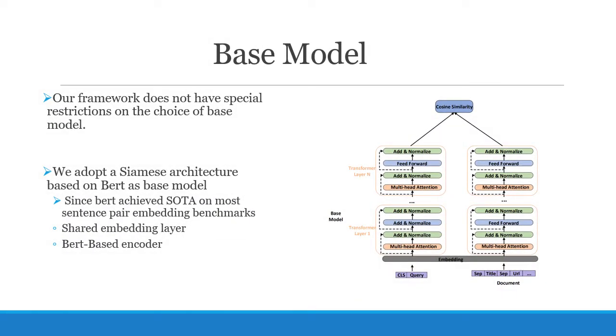It is worth noting that our framework does not have special restrictions on the choice of base model. Any model can meet our needs as long as it satisfies the Siamese architecture and can encode the query and document into vectors respectively. In this paper, we adopt a Siamese architecture just like previous work sentence BERT as our base model, since they have achieved state-of-the-art on some sentence pair embedding benchmarks. As shown in this figure, the base model mainly consists of three components: a shared embedding layer to fully leverage word semantic information, a BERT-based query encoder, and a BERT-based document encoder.